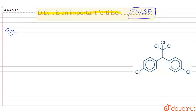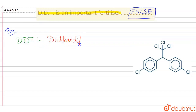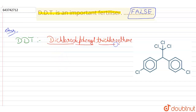Let's see what actually DDT is. The full form of DDT is dichloro diphenyl trichloro ethane. DDT is a non-biodegradable pollutant.